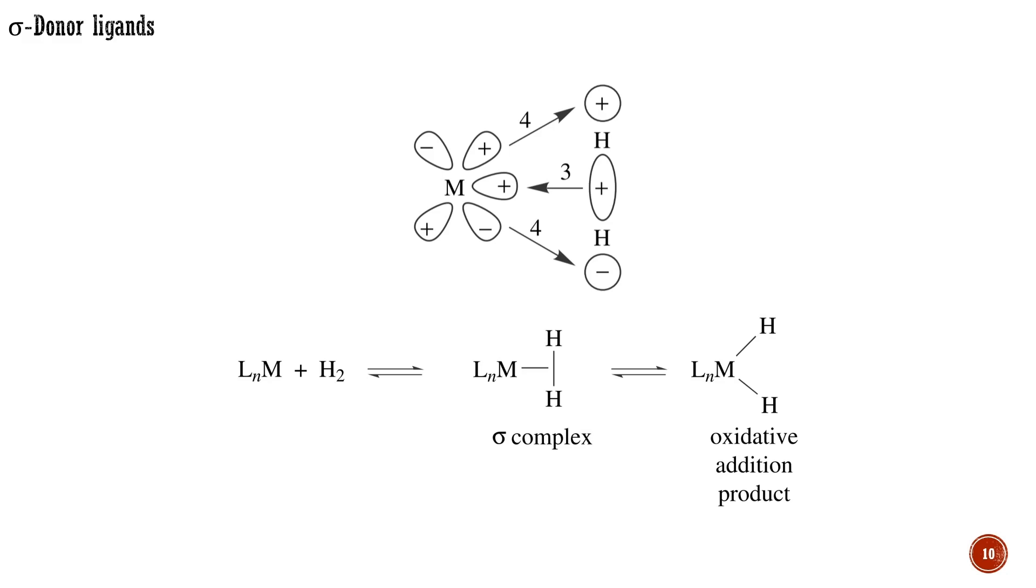This is the oxidative addition reaction, which will be described in detail in the following module. Formation of a σ-complex can be thought of as an incomplete oxidative addition, where only the addition part has occurred.